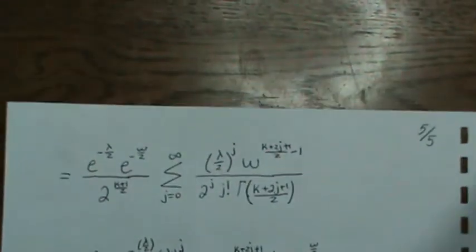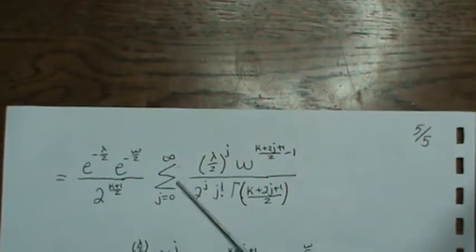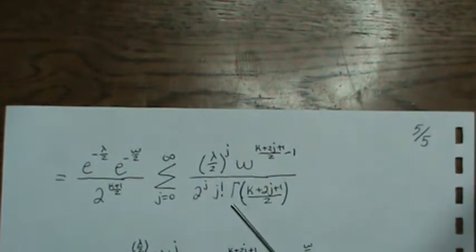Now we're getting really close. We're on the home stretch. Last page. So this can be rewritten as a sum from j to infinity like this.